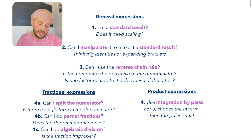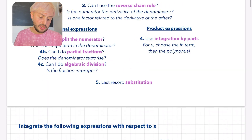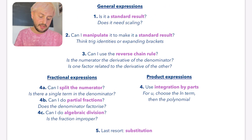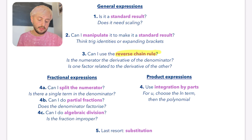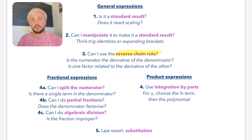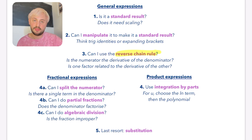In summary, for these expressions I really want you to use this order: if it's a standard result, just go for it and make sure you do the correct scaling. If you can manipulate it, make sure you do. If you can use the reverse chain rule, that is probably the most common one that comes up — and it's not often the one people think about. Then you've got the options for fractional and product expressions, and your last resort should be substitution. Check out the second video where I go through all these questions in full.